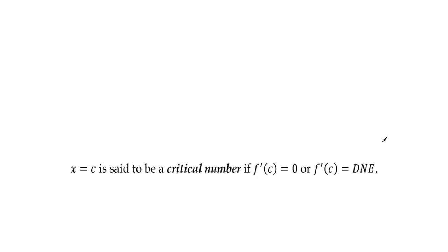x equals c is said to be a critical number if f'(c) equals 0 or f'(c) doesn't exist. So all local max and min occur at critical numbers. If we want to find local max and min, then it makes sense to check for critical numbers. That is, places where the derivative is either 0 or undefined.